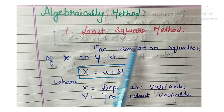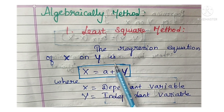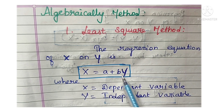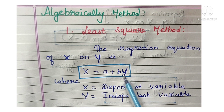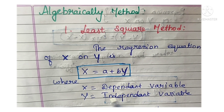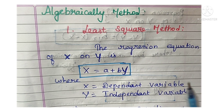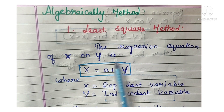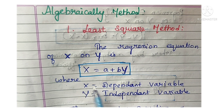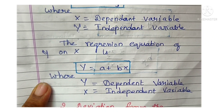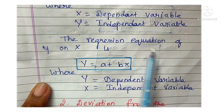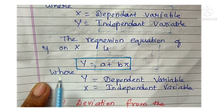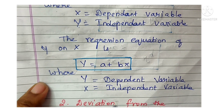Algebraic method — least square method. The regression equation of X on Y is: X = A + BY, where X is the dependent variable and Y is the independent variable. The regression equation of Y on X is: Y = A + BX, where Y is the dependent variable and X is the independent variable.